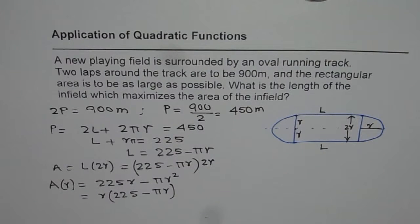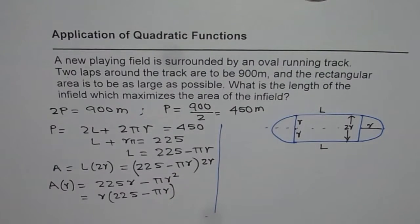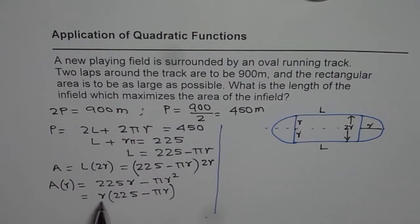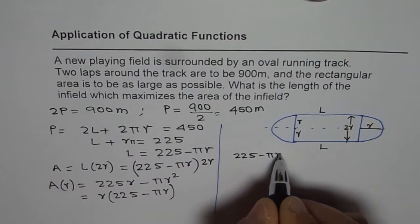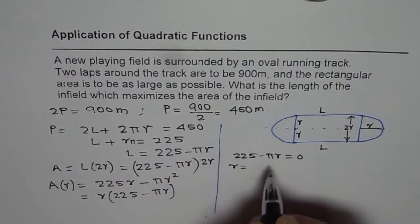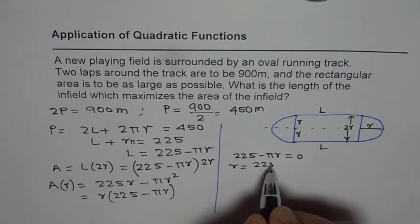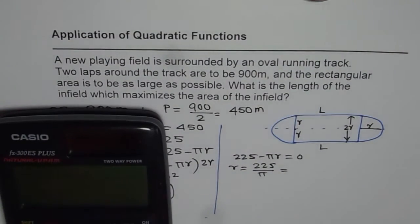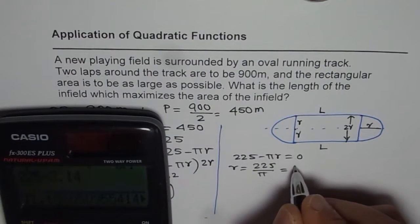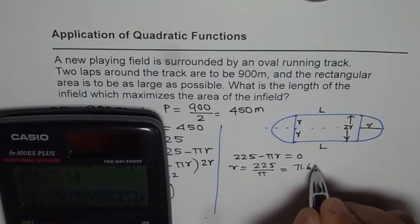We get R times 225 minus πR. So that means we get two zeros. Let me solve this now on the right side. So we have two zeros. One zero is at R equals 0. The other one is 225 minus πR equals to zero which gives us the value of R as 225 divided by π, which is equal to 225 divided by 3.14, equals to approximately 71.66.